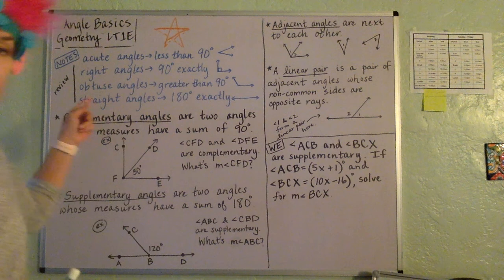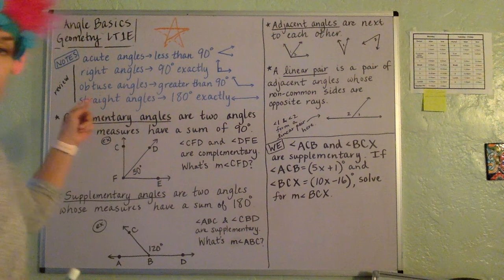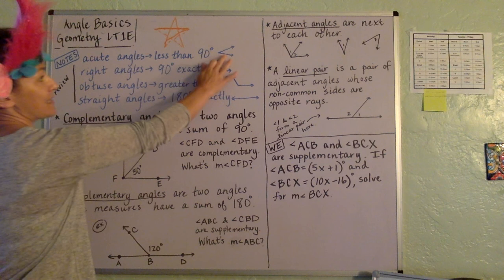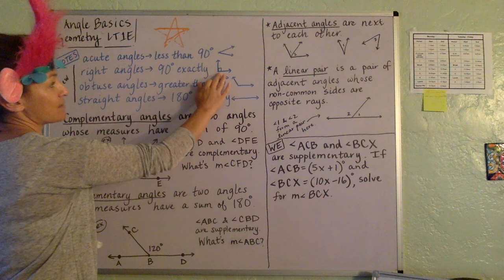So the first couple things here that you see in blue, I think these are things that you should have seen before. Acute angles are angles that are less than 90, maybe kind of look like this. Right angles are 90 degrees exactly. You can usually tell because there's a box in the corner.